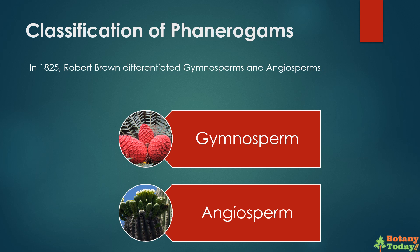Let's now see the classification of phanerogames. In 1825, Robert Brown differentiated gymnosperms and angiosperms. Thus, phanerogames are divided into two groups: gymnosperm and angiosperm.